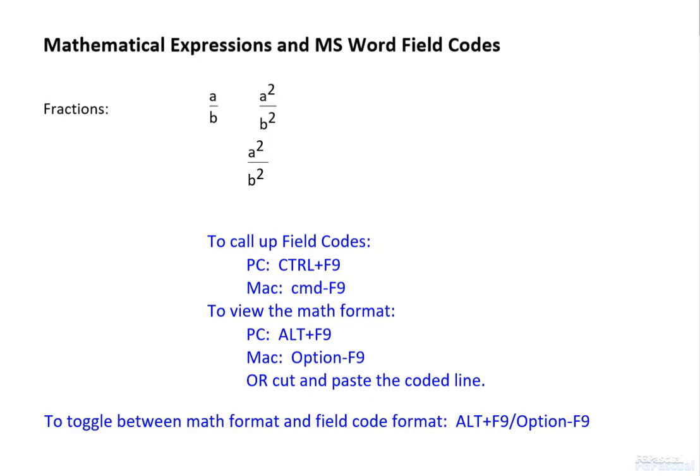Voila. A squared over b squared. Now, notice that there is a little bit of spacing right after a squared and right after b squared in the fraction. There is even spacing after the fraction.